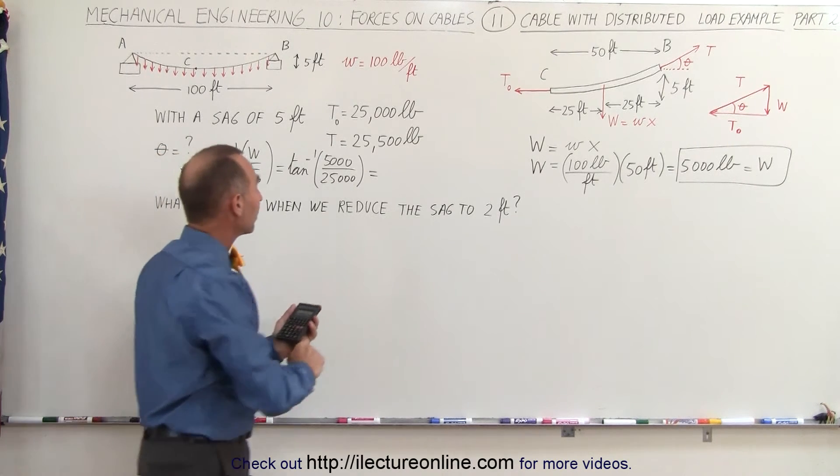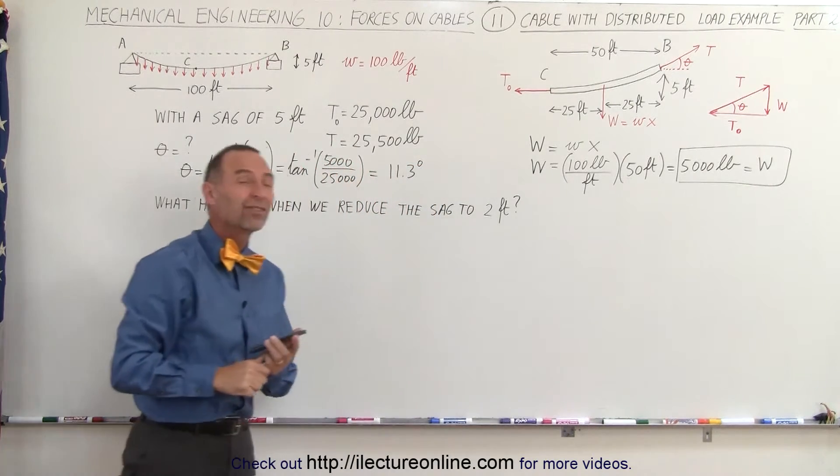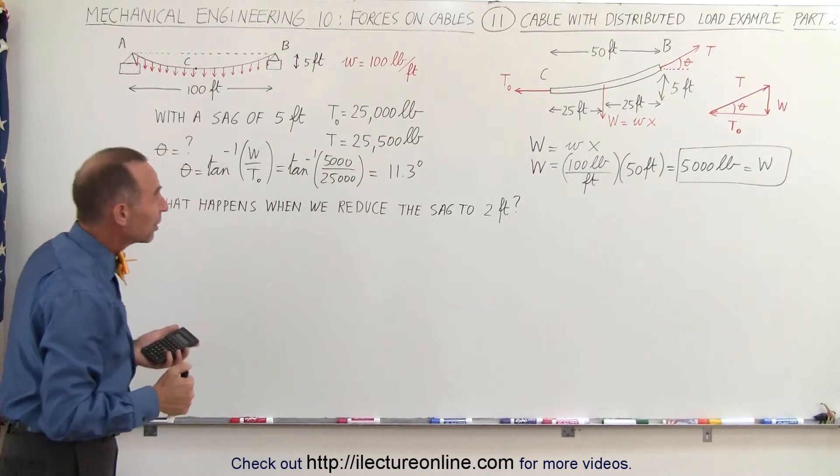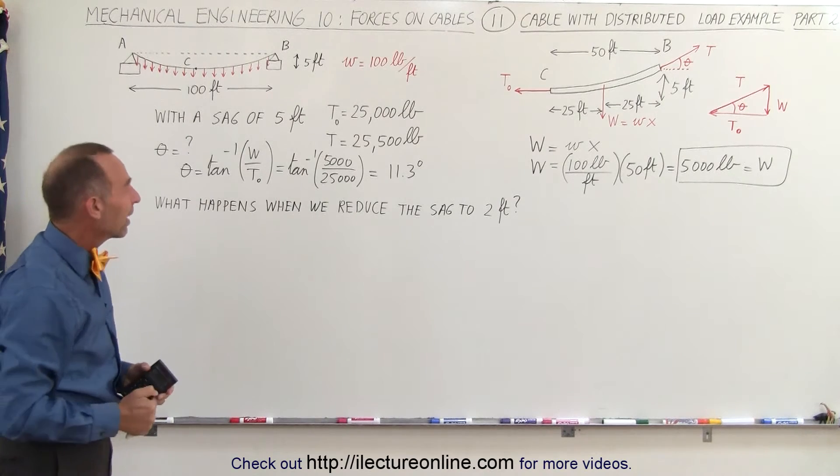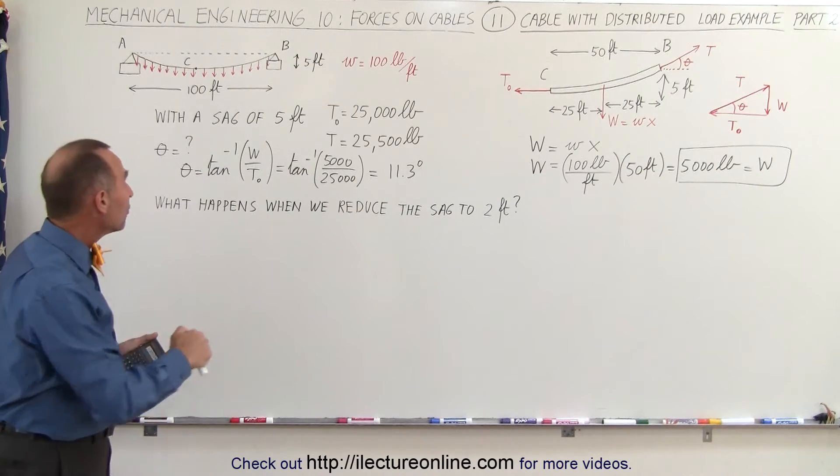We need a calculator for that, so that's 0.2, take the arc tangent and we get 11.3 degrees. That is a relatively small angle. At 11.3 degrees sine is about equal to the tangent, so we can go ahead and assume that that is a parabolic shape.